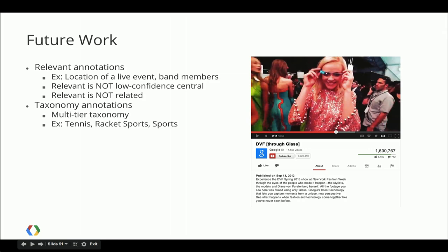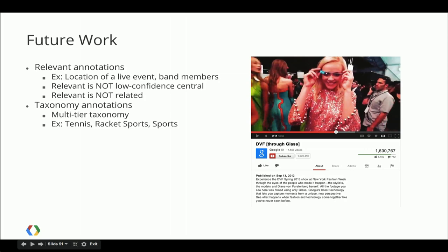For this example — central we actually annotated as Google Glass and D'Anton Prostenberg. Relevant would be New York Fashion Week, because this is where the video was shot. And then taxonomy, we'd probably put it into gadgets and technology, because it's primarily about Google Glass. But similarly, events could probably also fall into the taxonomy classification. So hopefully this answered your questions and maybe even raised some new ones that we would love to hear.